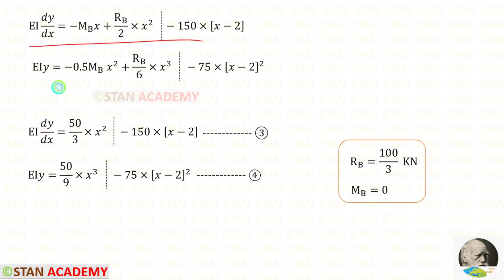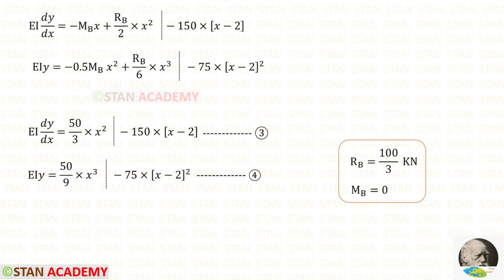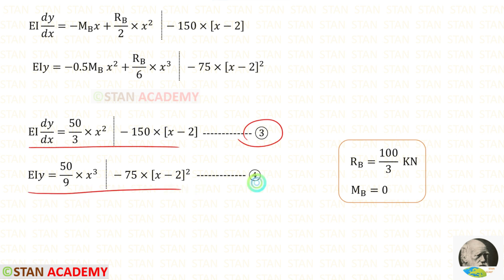In the slope and deflection equations let us apply the values of RB and MB. This gives us Equation 3 (the slope equation) and Equation 4 (the deflection equation).